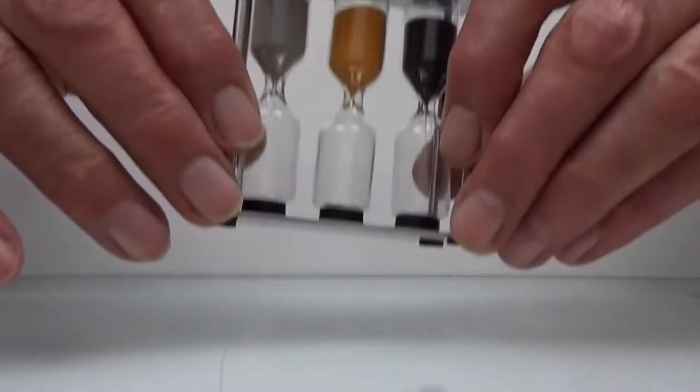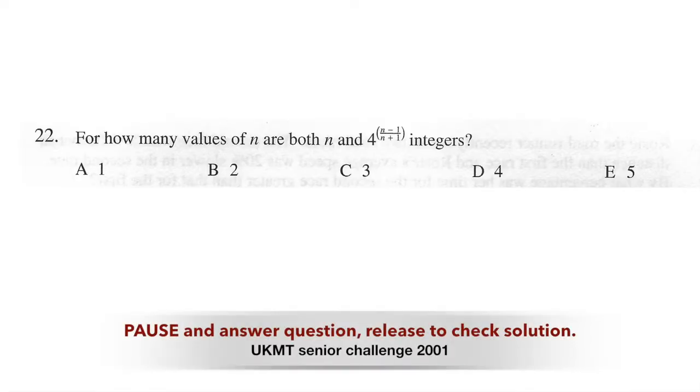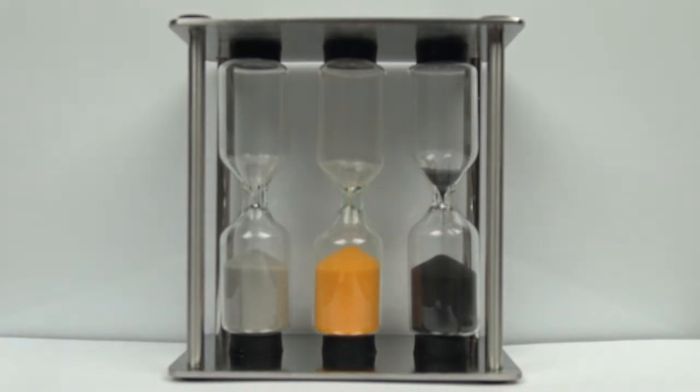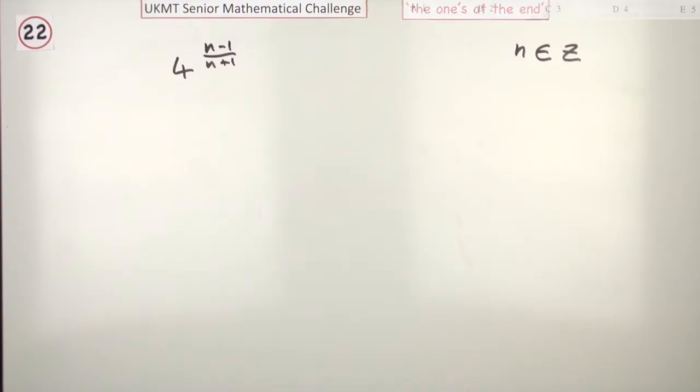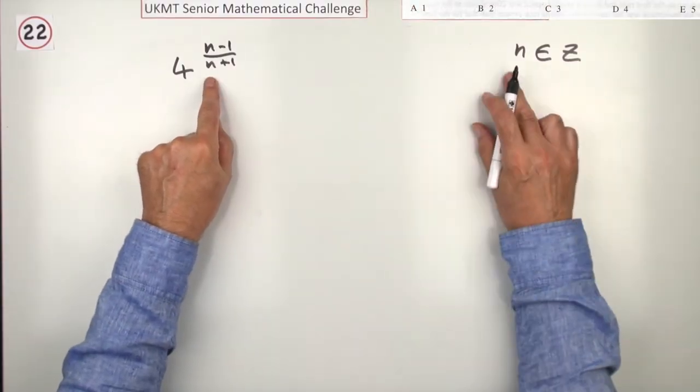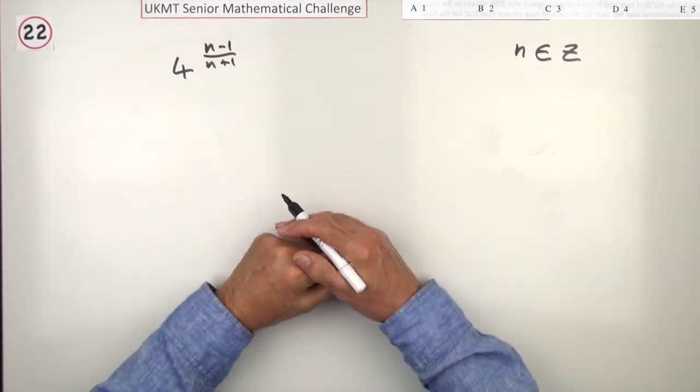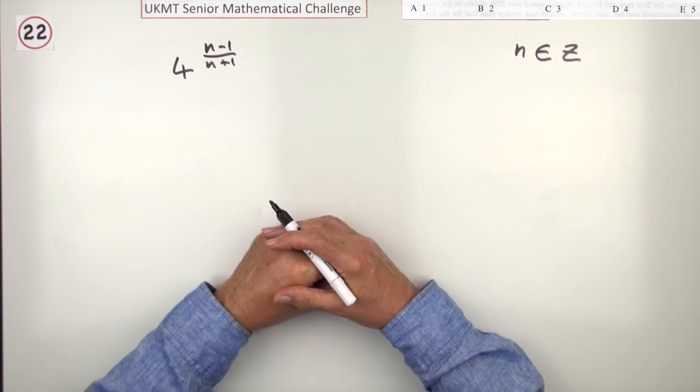So ready and go! In this one, how many values of n where n is an integer are there so that this expression here is also an integer?